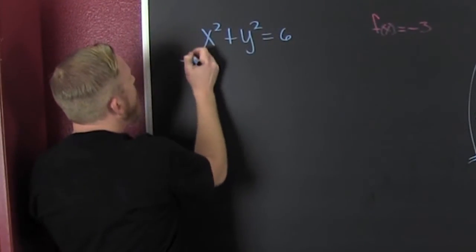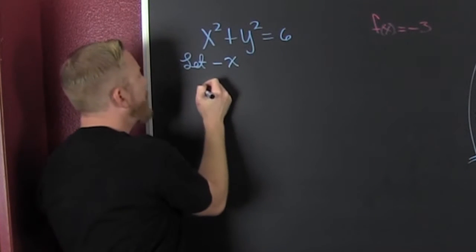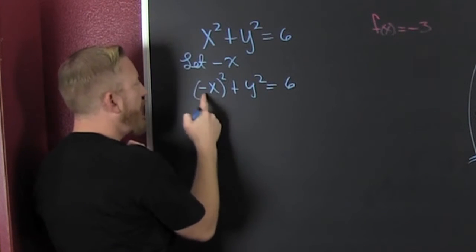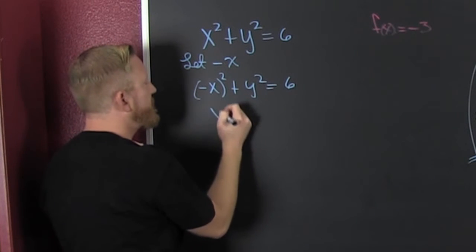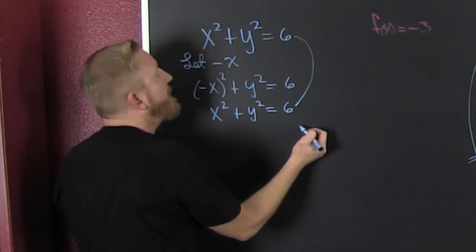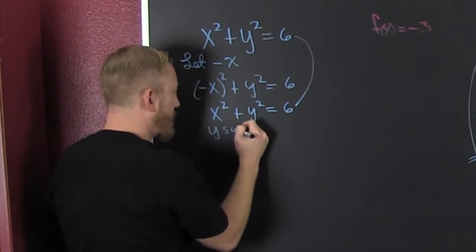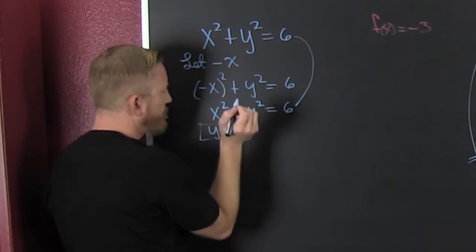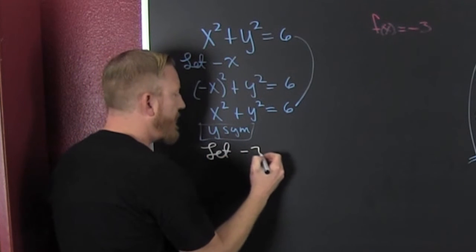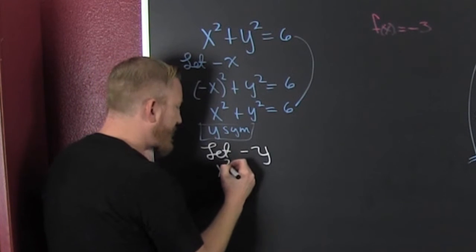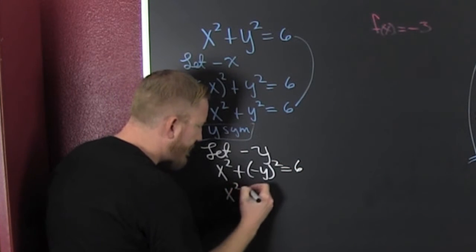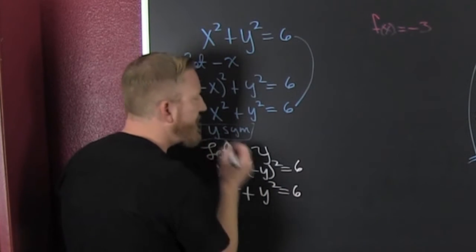Now let's look at the next equation. We let negative x: negative x squared plus y squared equals six. Since it's an even power, negative x times negative x is x squared, so we get x squared plus y squared equals six. That's the same as the original, so this is y-axis symmetric. Checking x-axis symmetry, we let negative y: x squared plus negative y squared equals six, which gives x squared plus y squared equals six — the original again. So this is also x-axis symmetric.